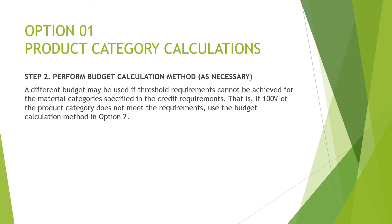Step two is to perform the budget calculation method as necessary. A different budget may be used if threshold requirements cannot be achieved for the material categories specified in the credit requirements — that is, if 100% of the product category does not meet the requirements, use the budget calculation method in option two.